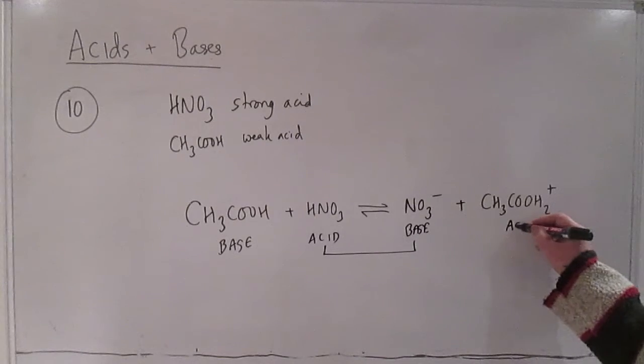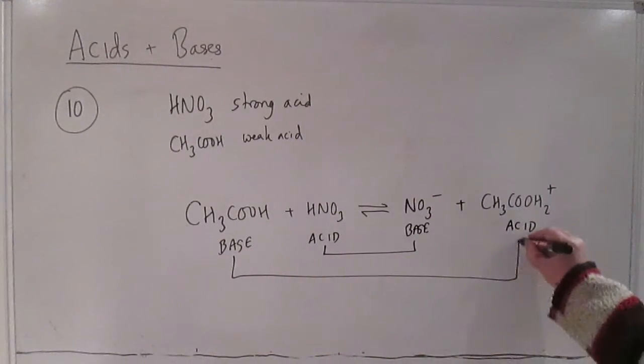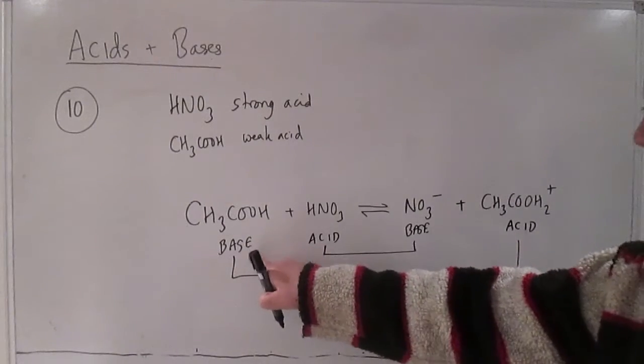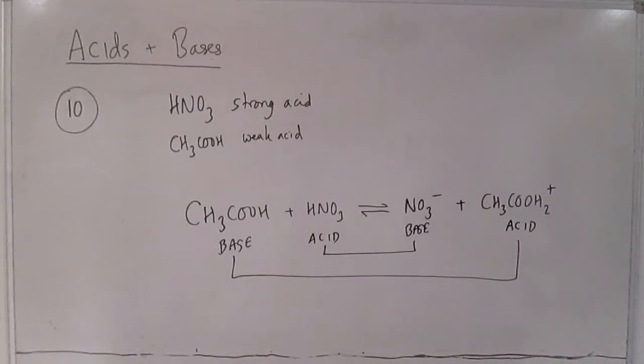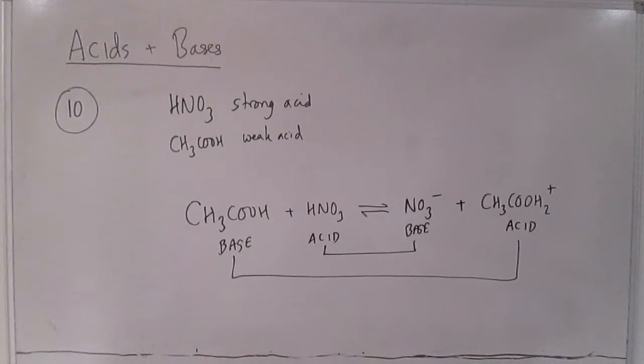And this is the conjugate acid of ethanoic acid. So in this case ethanoic acid is the base and this rather weird looking thing is its conjugate acid with the extra proton. So in the back reaction this acts as an acid and donates a proton to nitrate to generate nitric acid.